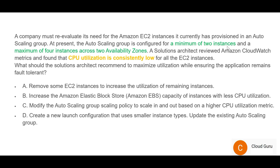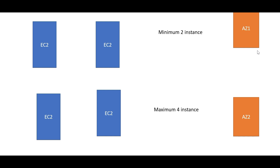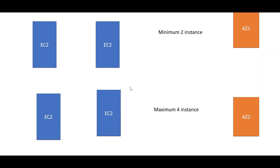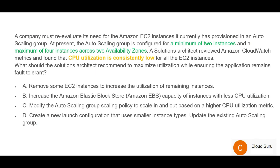The keywords for Question 51: minimum two instances and maximum of four instances across two Availability Zones. The question asks about a scenario where CPU utilization is very low for all EC2 instances, meaning the load is not high. The solution architect should recommend how to maximize utilization while ensuring the application remains fault tolerant. Using a single EC2 instance is out of scope because once it crashes there will be no backup, and the question requires fault tolerance.